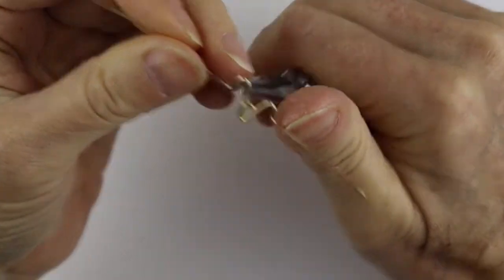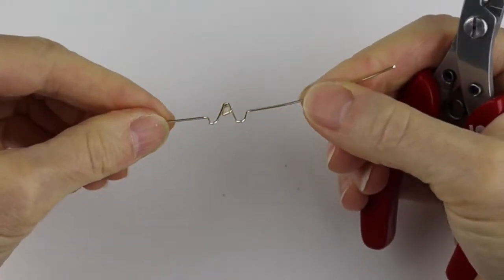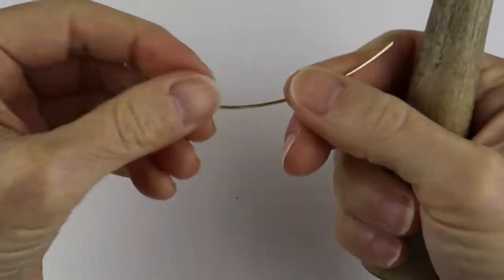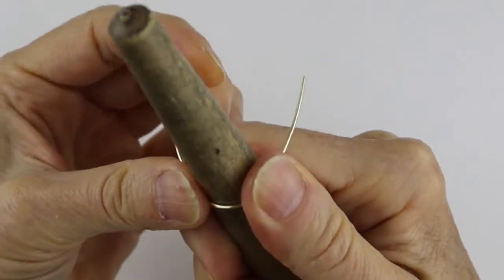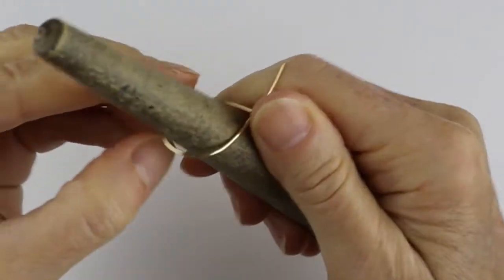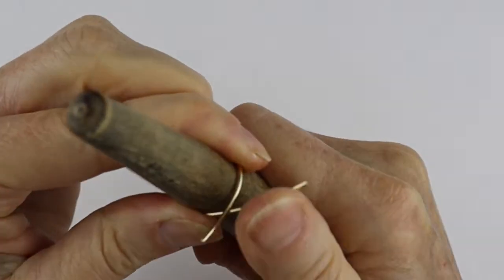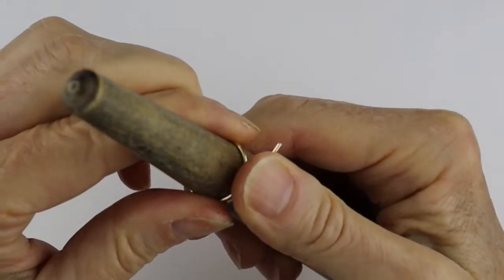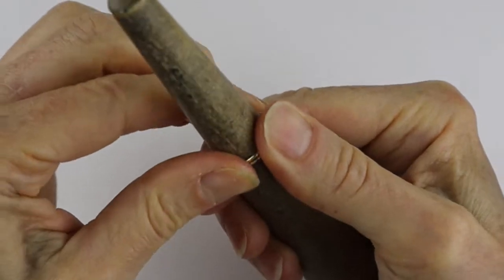Then we want to make the ring form. I have a thicker wire, 18 gauge wire, and we're just going to wind it around the ring cone. Now I have a tutorial that's 'Rings to Make and Sell.'